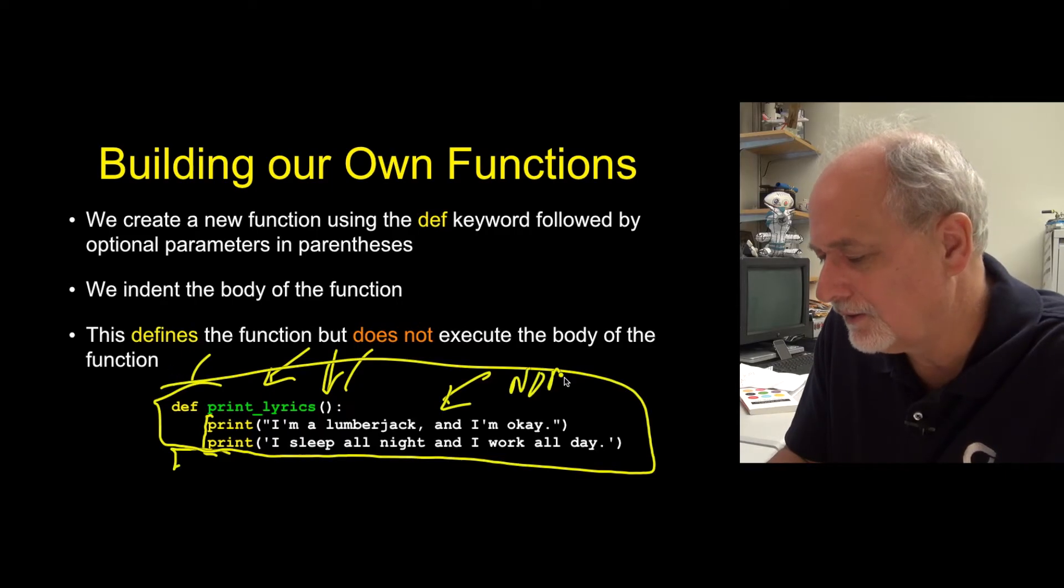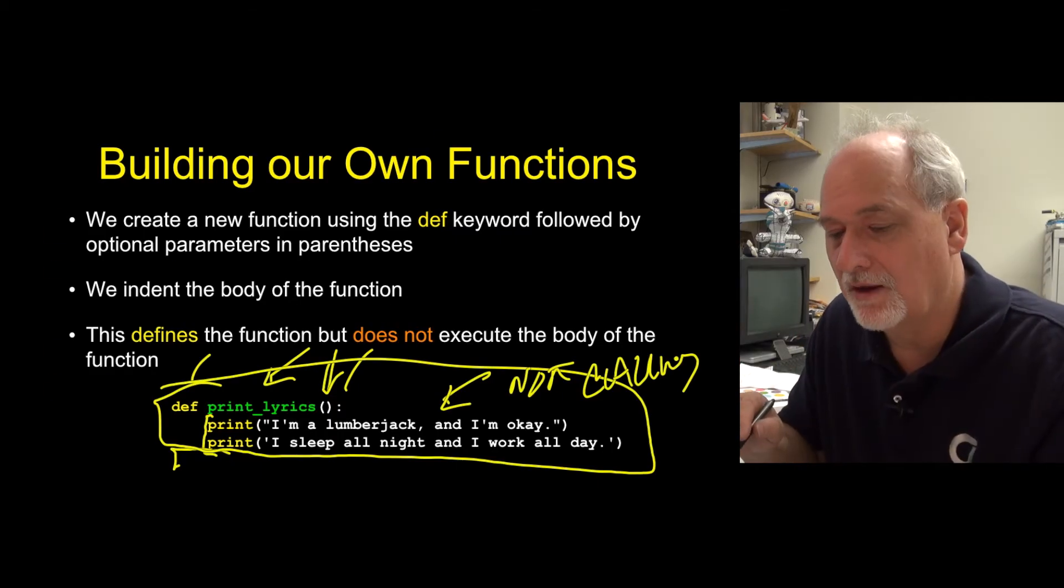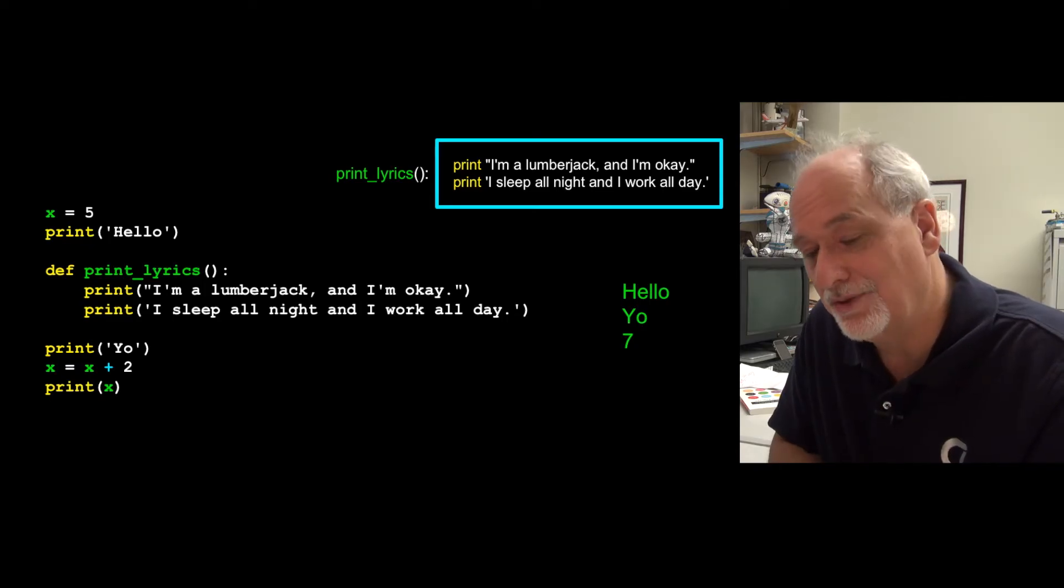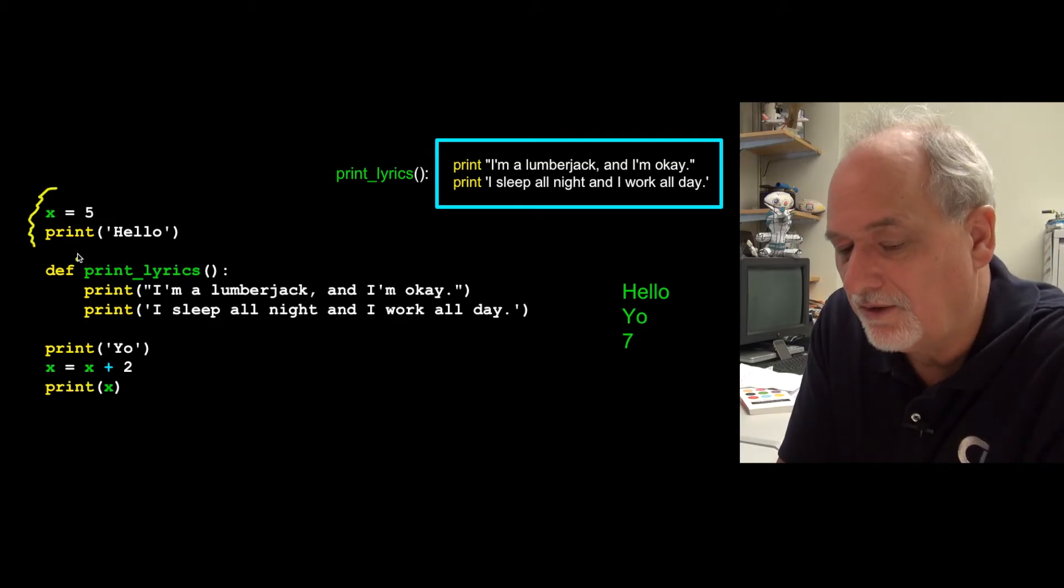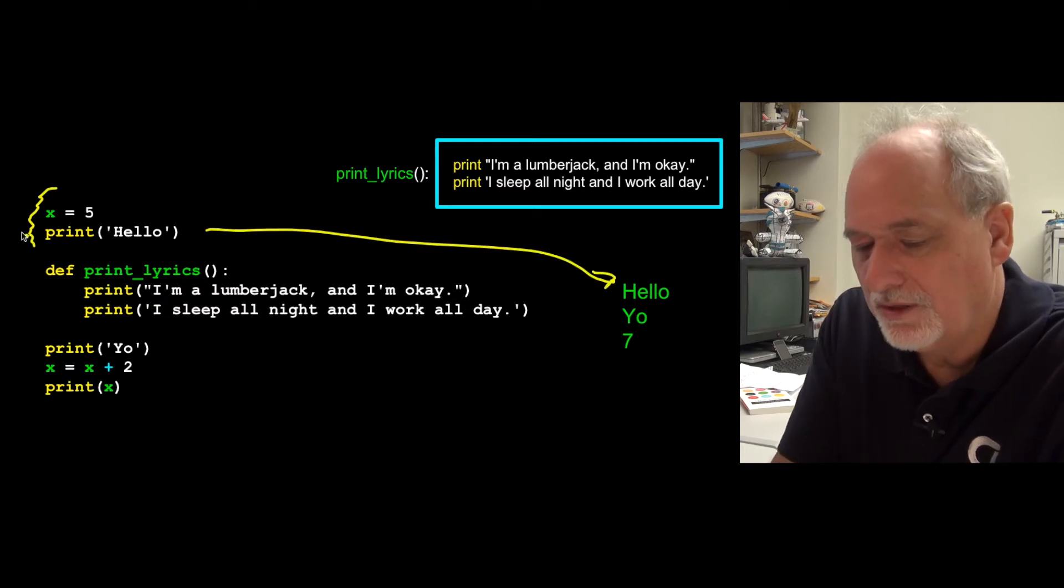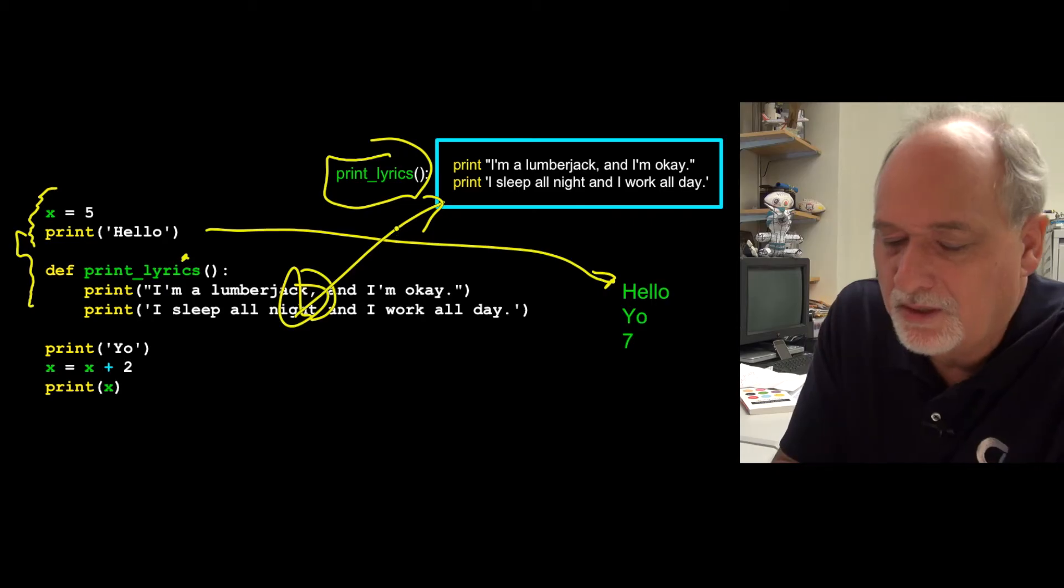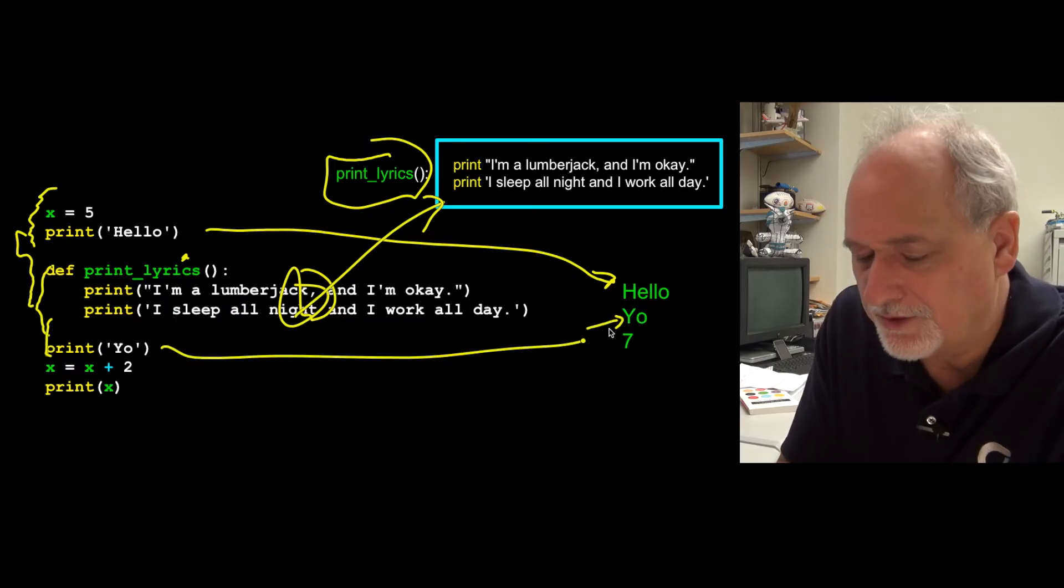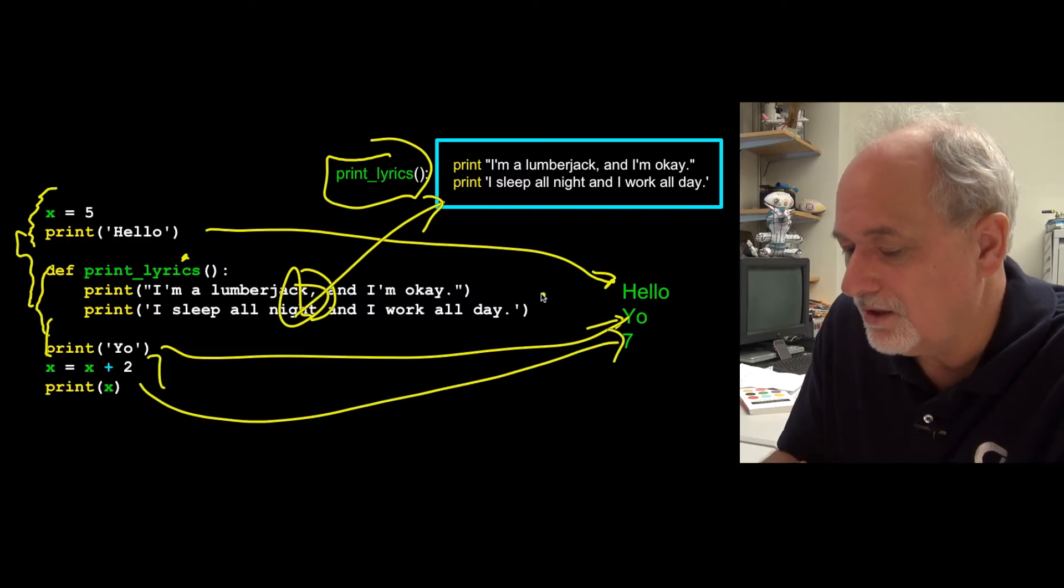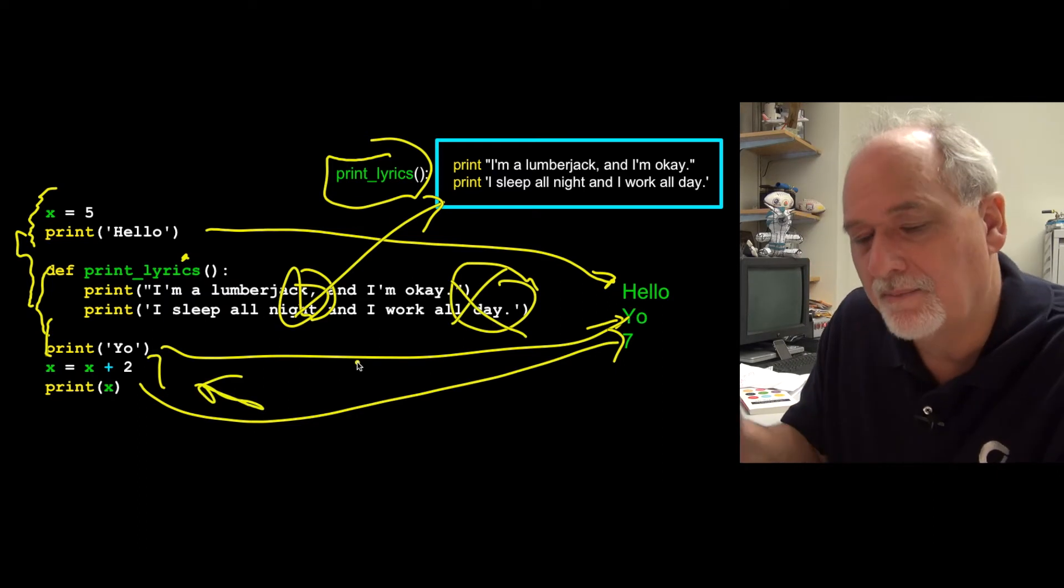The key thing here is this is not calling, it's not invoking, it's not executing, it's remembering, it's storing. Here is the output of a program that defines a function but then doesn't use it. So here we go, we start x equals five, print hello, then we define a function and it copies this stuff, says later you probably are going to want to use this, so I'm going to remember it. No output comes out. Then it says print yo, and out comes yo, then it adds two to x so x is now seven, and prints seven. These print statements never ran because we did not invoke them down here. We defined them but didn't invoke them.